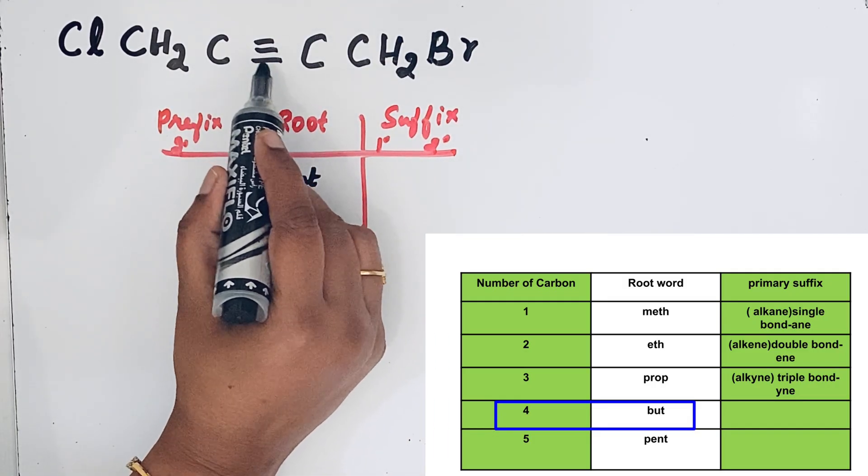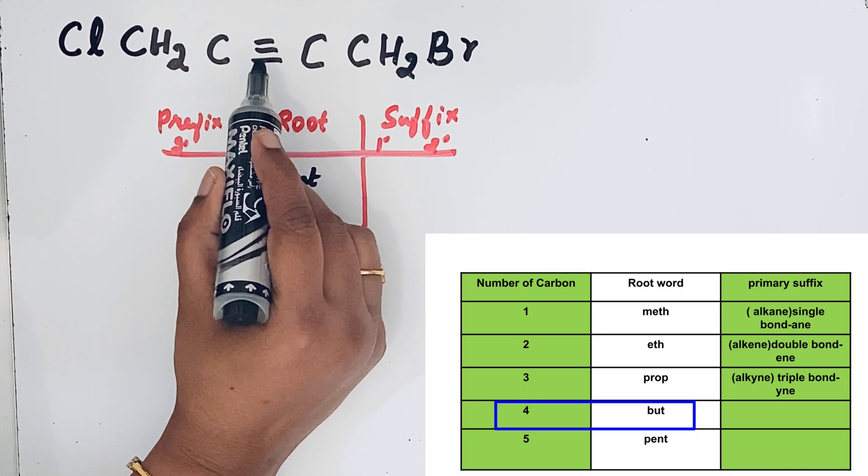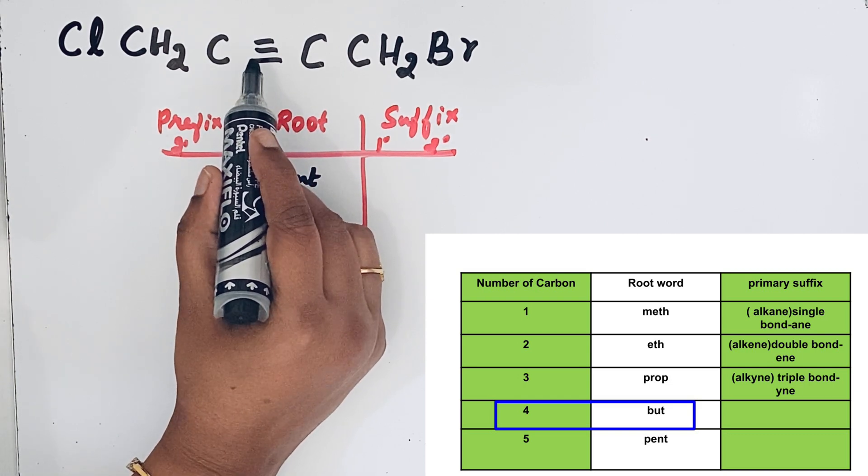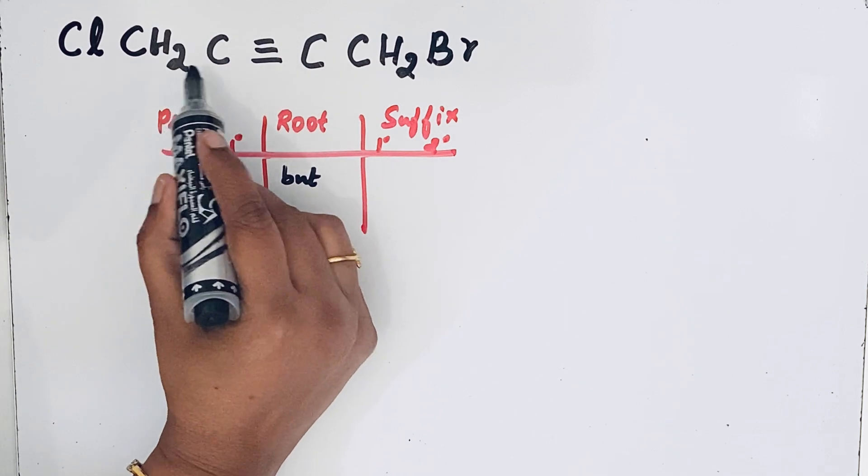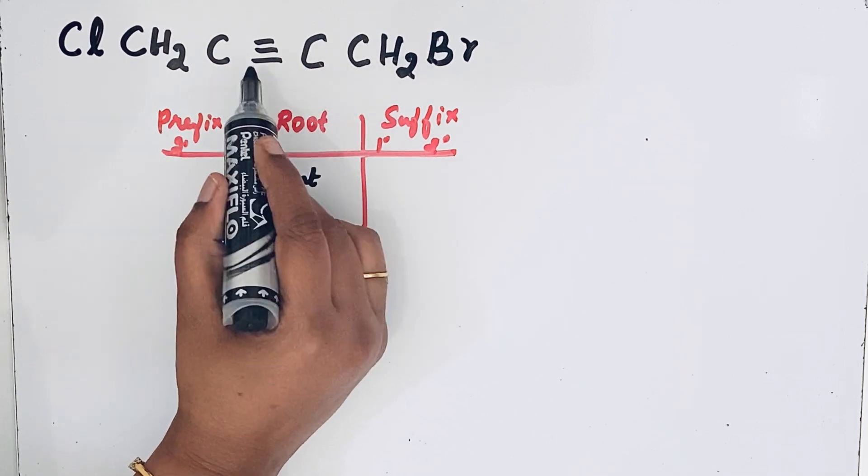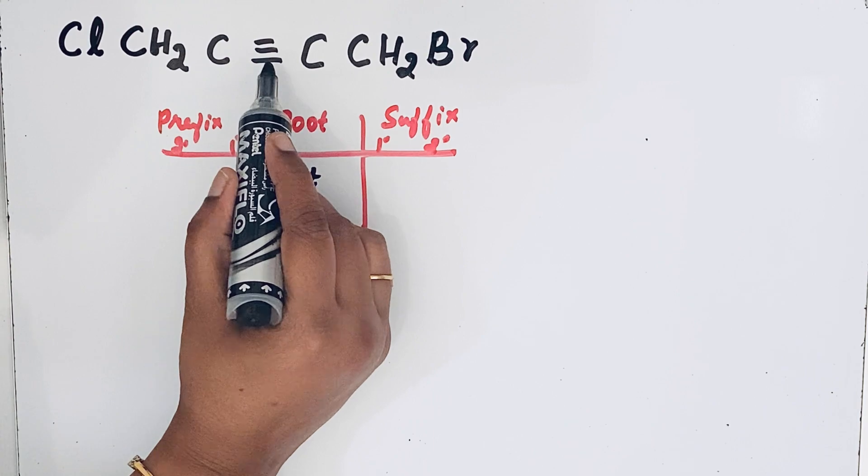Then here we have the triple bond, so it is a functional group should get the lowest number. If we give that numbering from left to right or right to left, this triple bond gets the same number.